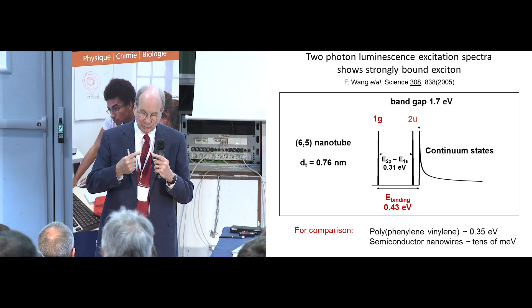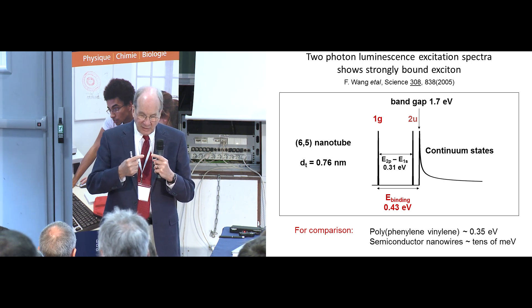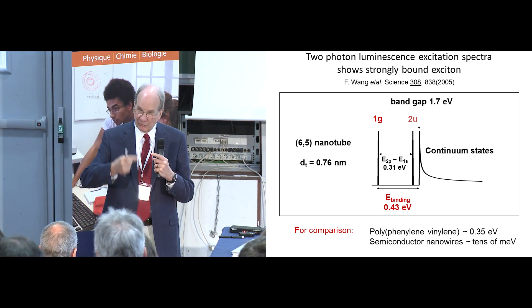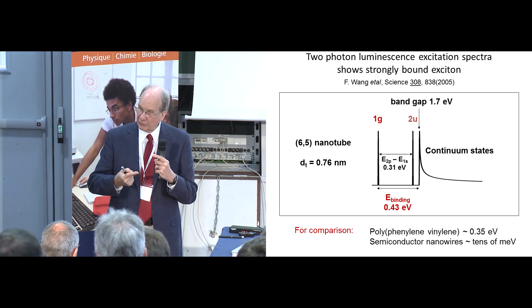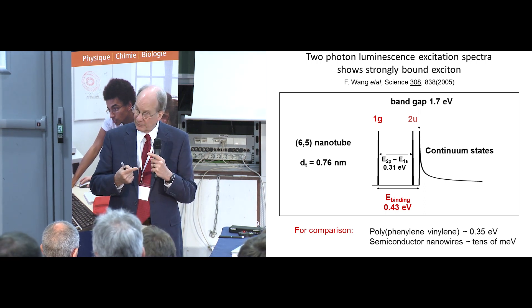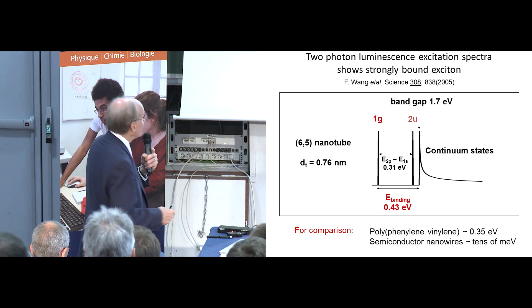And if you think about it with a hydrogenic model, if you have a four-tenths of a volt binding energy for the exciton, the Coulomb attraction is actually eight-tenths of a volt when averaged over the wave function. So it's almost the same size as the band gap itself. Very strong excitonic formation.